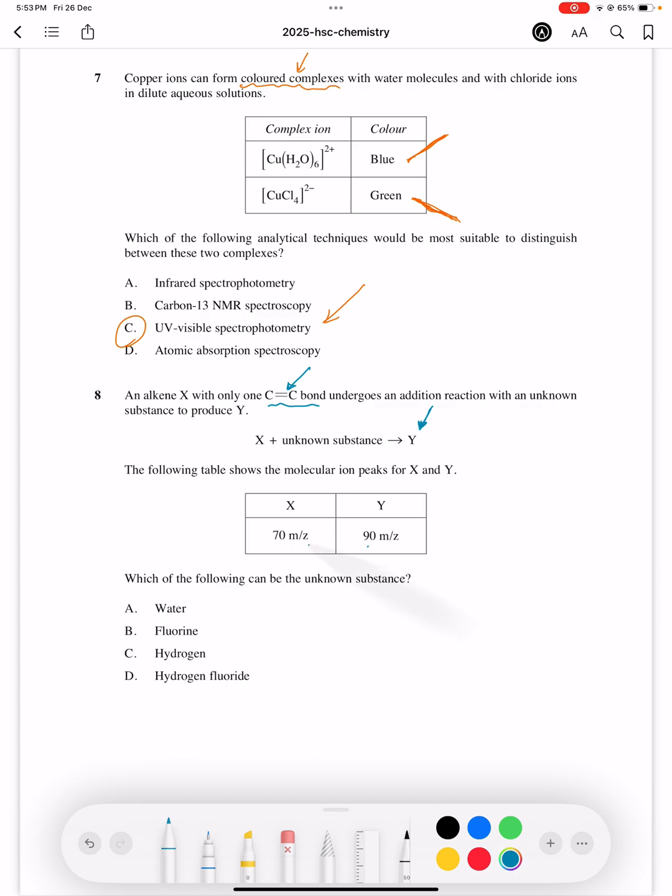So let's have a look at the molecular ion peaks for X and Y. The difference, which is 90 minus 70, equals 20. This is the molecular mass of the unknown substance that was taken up by this alkene during the addition reaction.